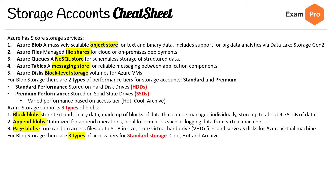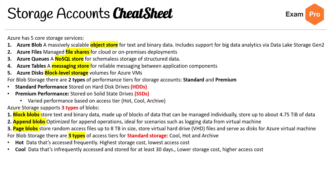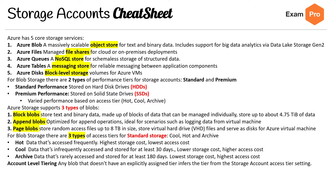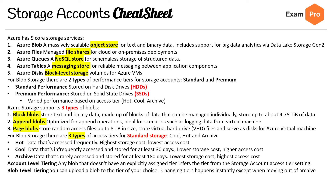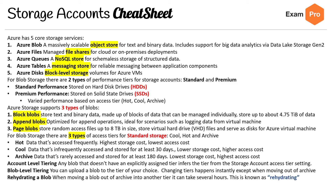For blob storage, there are three types of access tiers for standard storage: hot, cool, and archive. Hot data is accessed frequently. Cool data is accessed infrequently. Archive data is rarely accessed and stored for at least 180 days. For account level tiering, any blob without an explicitly assigned tier infers the tier from the storage account access tier settings. For blob level tiering, you can upload a blob to the tier of your choice and changing the tier happens instantly, except when moving out of archive — then there's the concept of rehydration, which can take several hours.